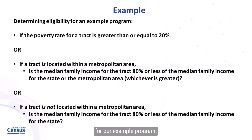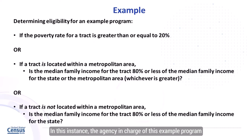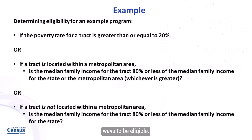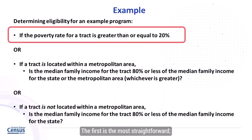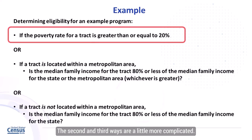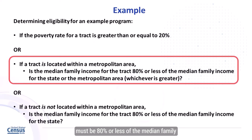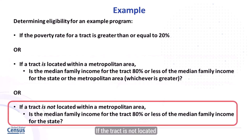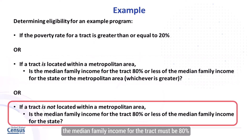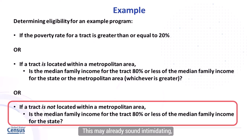Let's take a look at the qualifications for our example program. The agency in charge has specified three different ways to be eligible. The first is the most straightforward: if the poverty rate for the tract is 20% or higher, eligibility would be a yes. The second and third are more complicated. If the tract is in a metropolitan area, the median family income for the tract must be 80% or less of the median family income for the state or metropolitan area, whichever is greater. If the tract is not in a metropolitan area, the median family income for the tract must be 80% or less of the median family income for the state.